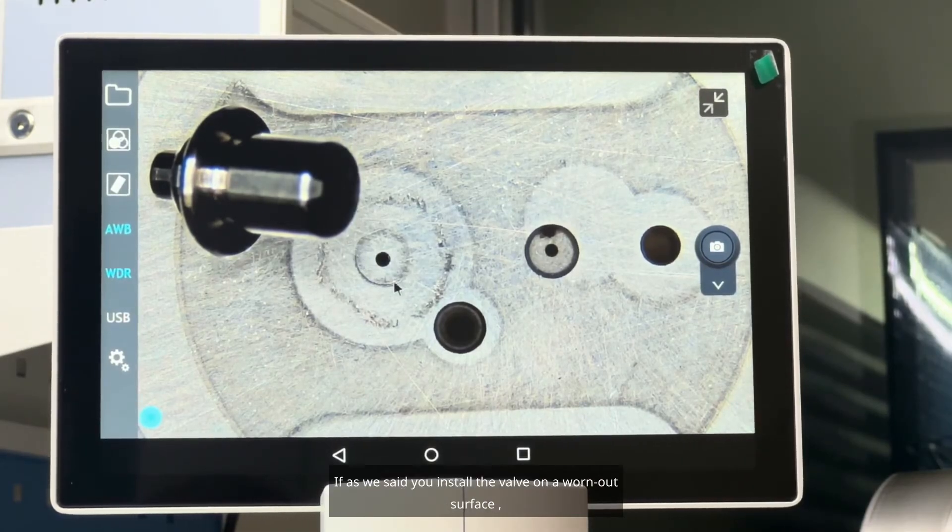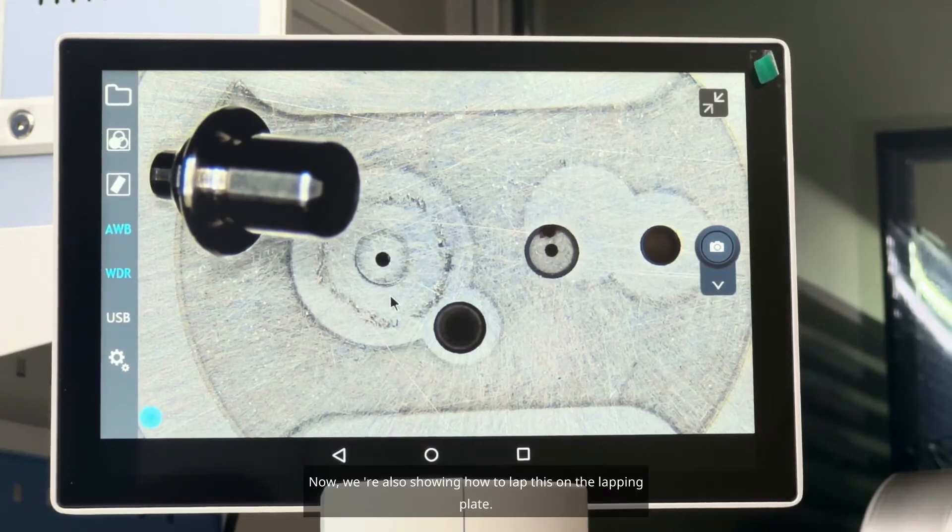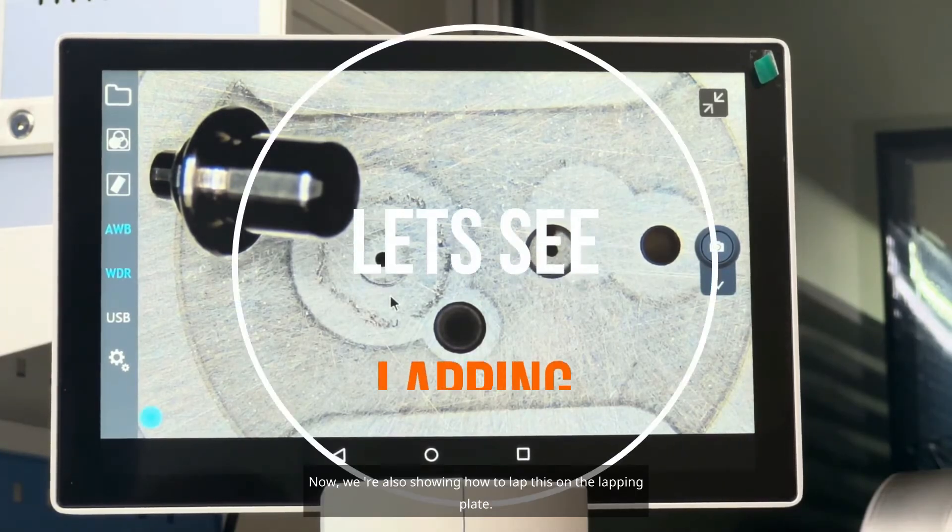If, as we said, you installed a valve on a worn out surface, there will be a slight drop in the fuel amount. It won't pass the ISA man's test. Now, we're also showing how to lap this on the lapping plate.